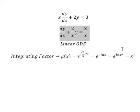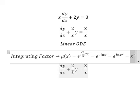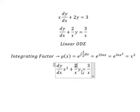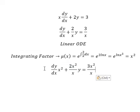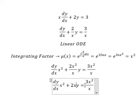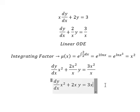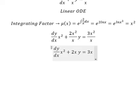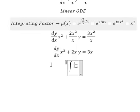That means we need to multiply both sides by this one. So we simplify, we have 2x, 3x. We put the integrating factor on both sides.